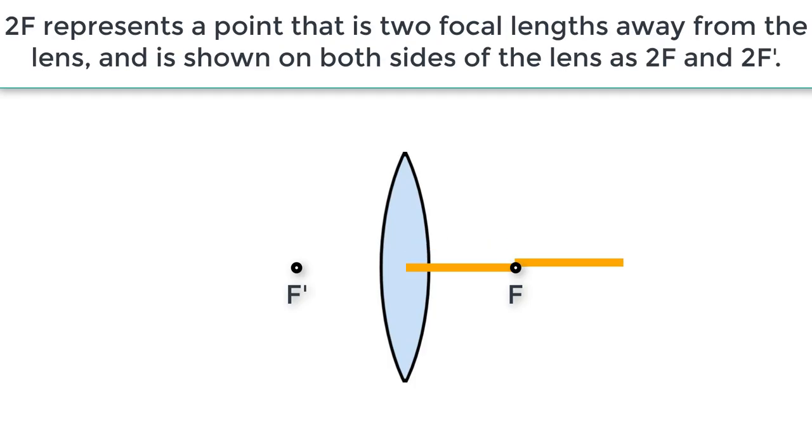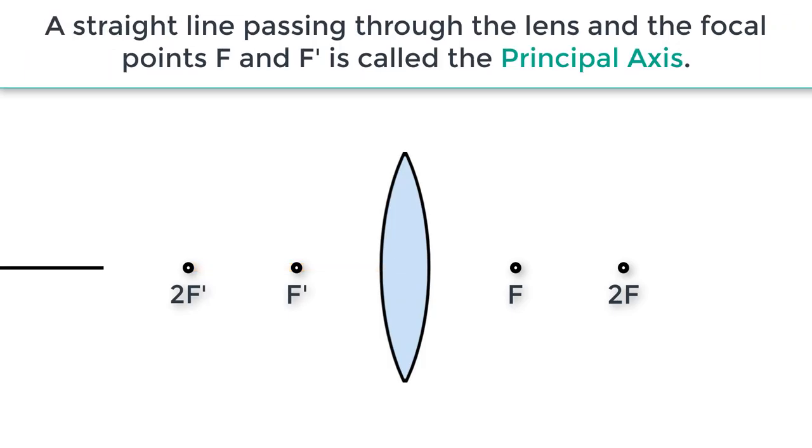2F represents a point that is two focal lengths away from the lens and is shown on both sides of the lens as 2F and 2F prime. A straight line passing through the lens and the focal points F and F prime is called the principal axis.